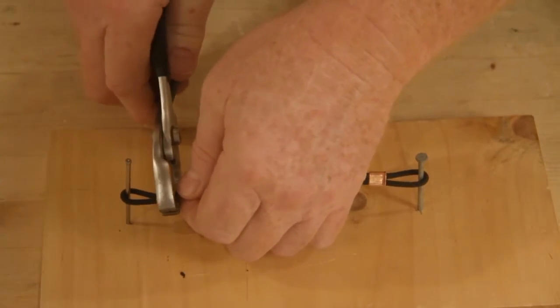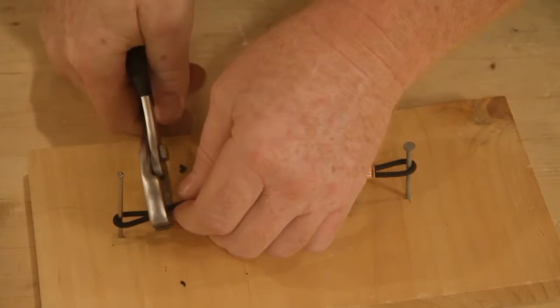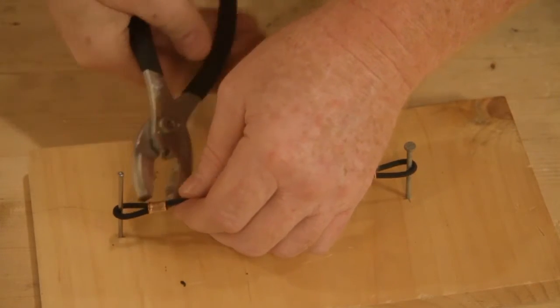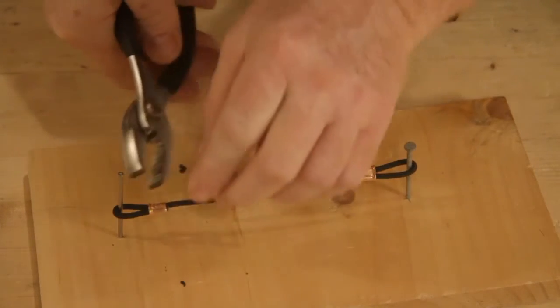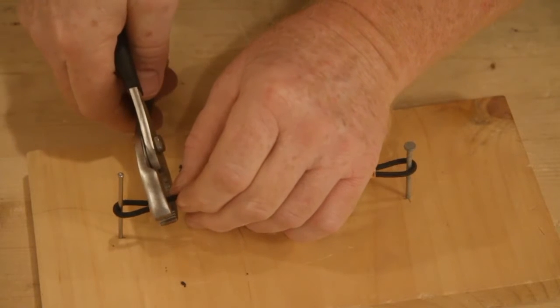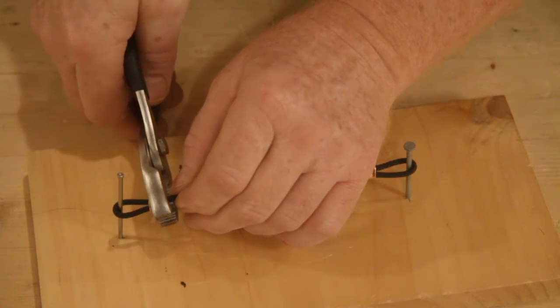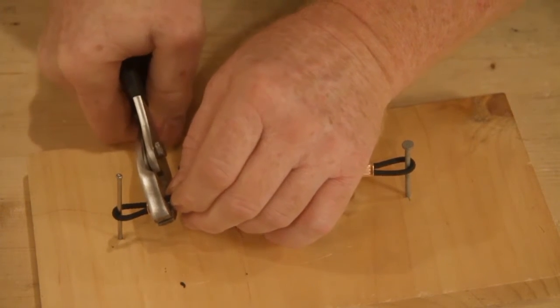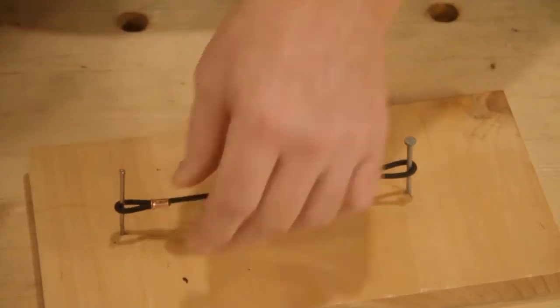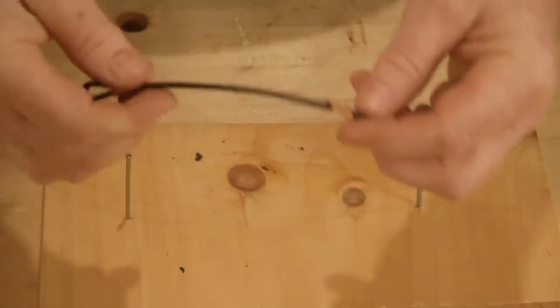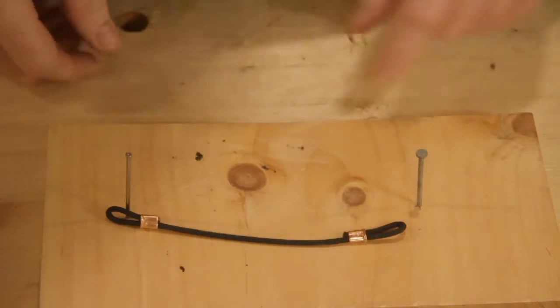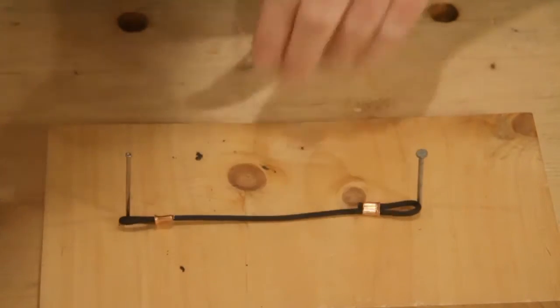We go ahead and crimp it on there with the pliers and then we use that spike right there on the pliers in between the two strings. And we squeeze that real good and tight. And now we have a 6 1/2 inch tip spacer. That's exactly the right length.